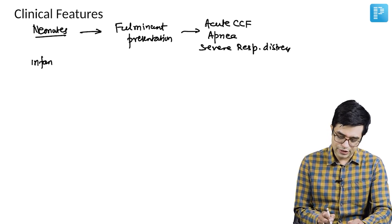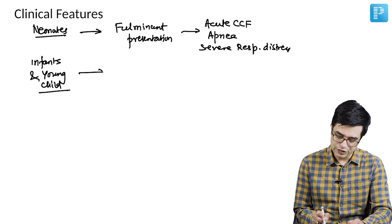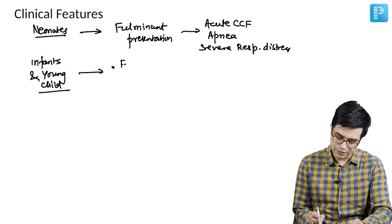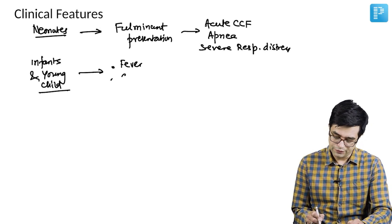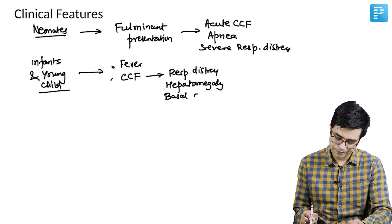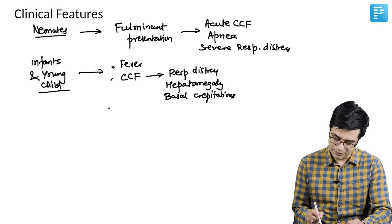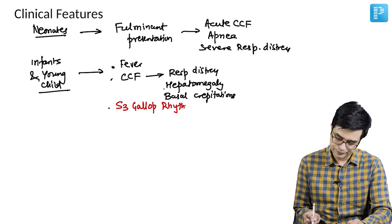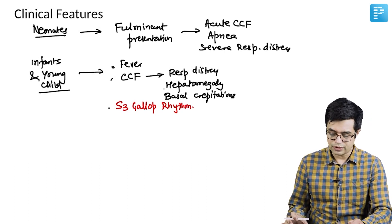In case of infants and young children, you will have features like fever, features related to congestive cardiac failure, which will produce respiratory distress as well as hepatomegaly. There will be basal crepitations also happening, and there will be presence of S3 gallop rhythm when you try to auscultate.